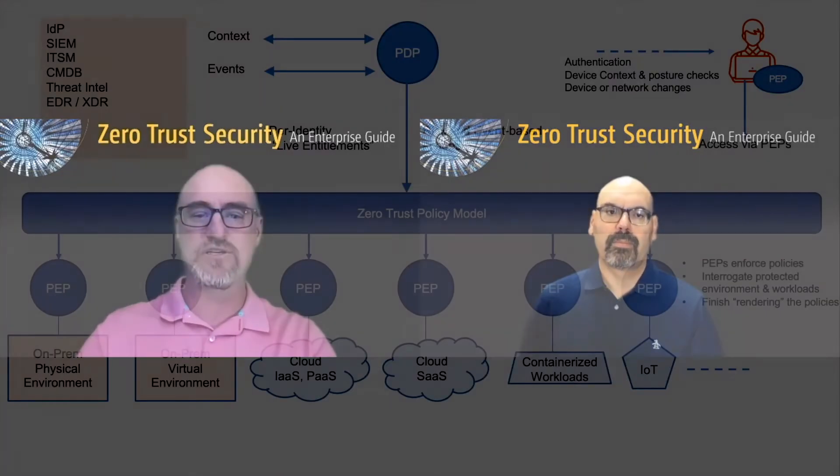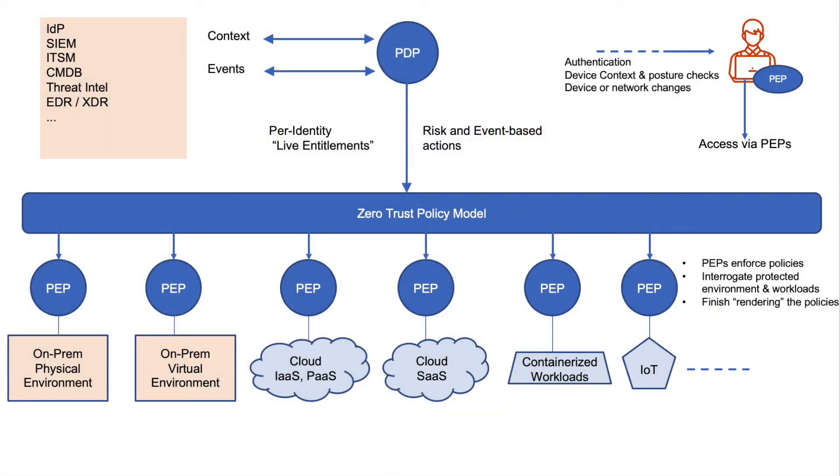Looking at the next slide, we have the three classifications of PEPs broken down further. If you think about on-prem physical environments, the on-prem virtual environment, the cloud environment whether it's IaaS or PaaS, containerization, IoT — all of those are different types of PEPs. One piece not shown here that I want to call out is the mobile device — it may not just be an organization-issued device, it could be a personal phone, an Android, an iPhone — and we've talked about a PEP being there as well. Having a PEP across all of those environments is really core.